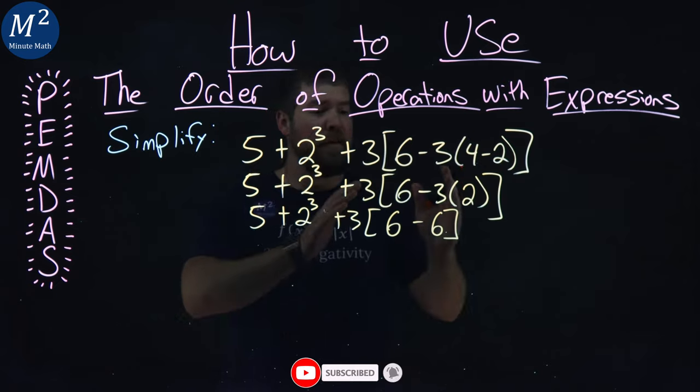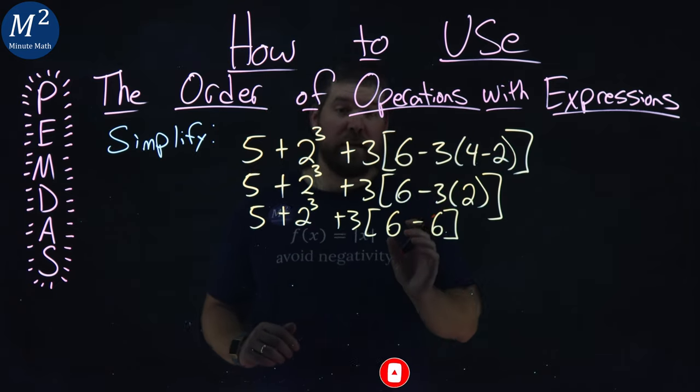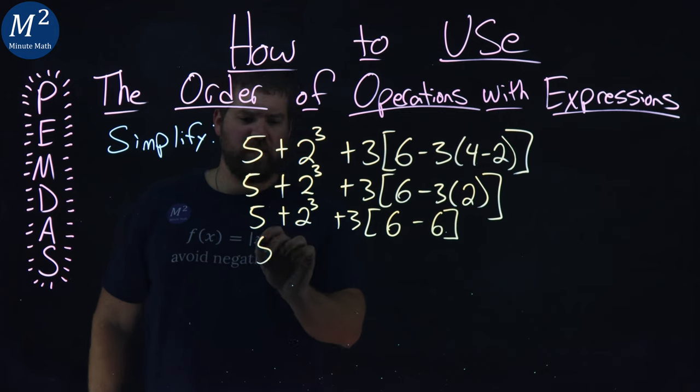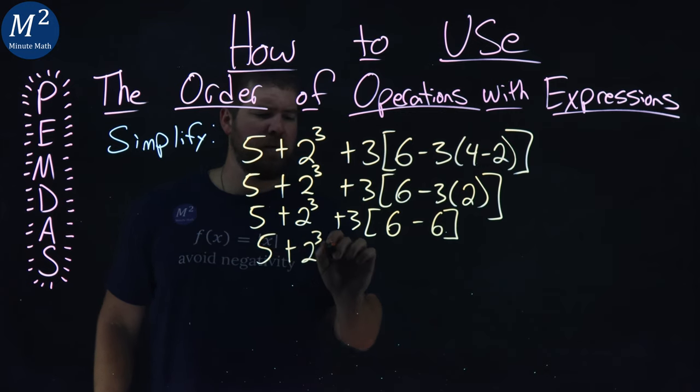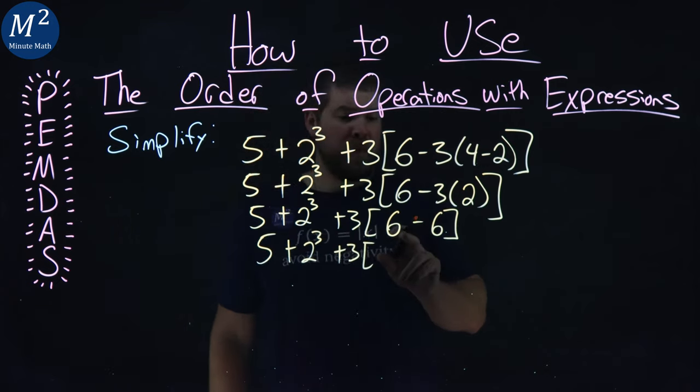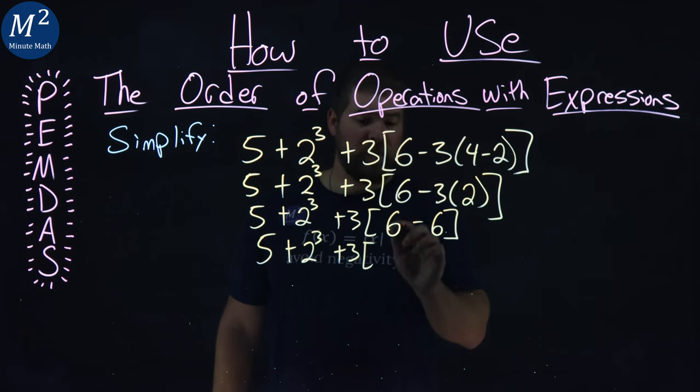Again, we still have a bracket that still has operations on the inside left to do, so everything else we just rewrite again. 5 plus 2 to the 3rd plus 3 in brackets here. 6 minus 6 is 0. Makes it pretty easy now.